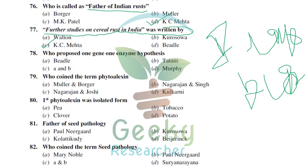The one gene–one enzyme hypothesis was proposed by Beadle and Tatum. The term 'phytoalexin' — 'phyto' means plant, 'alexin' means protecting substance — was coined by Müller and Börger. Phytoalexins are substances produced by the plant to protect against infecting pathogens. The first phytoalexin to be isolated was pisatin from Pisum sativum in 1940.